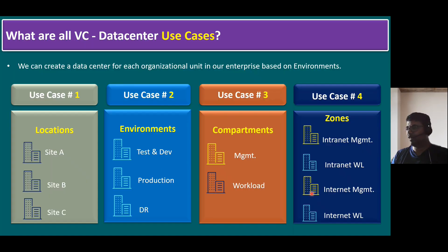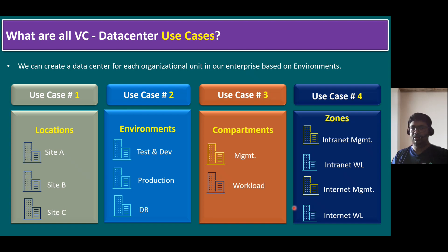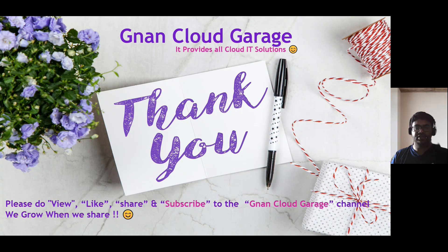The naming conventions depend on the customer use case scenario. If the customer recommends compartment-wise separation, create data centers for management and workload. If the customer wants zone-wise data centers, create two for intranet and two for internet. I've given a high-level overview of data center use cases with four examples, but naming conventions may vary. Hope you understand how to create a data center in vCenter and the data center use case examples. That's it for today — thank you. If you're watching for the first time, please like, share, and subscribe to the Ignant Cloud Garage channel. If you're already subscribed, I appreciate all your support. Bye for now.